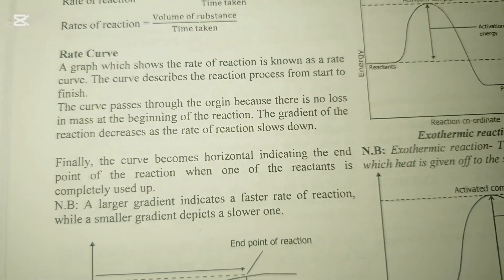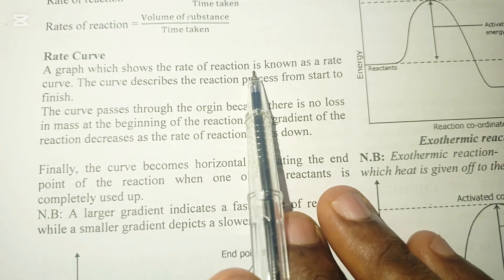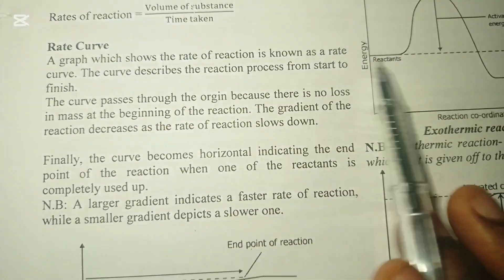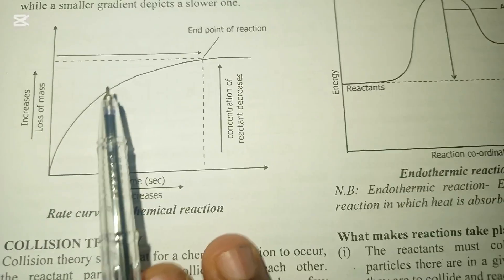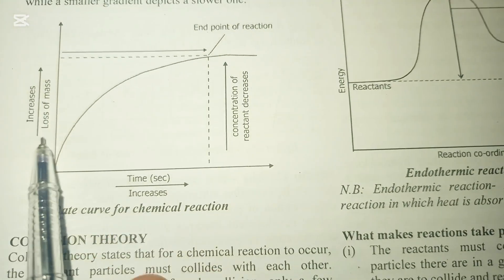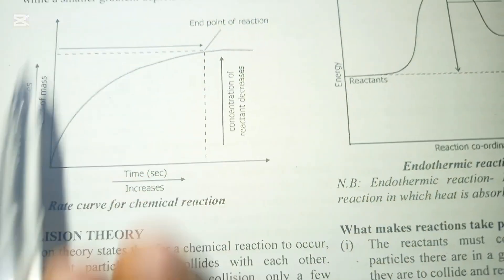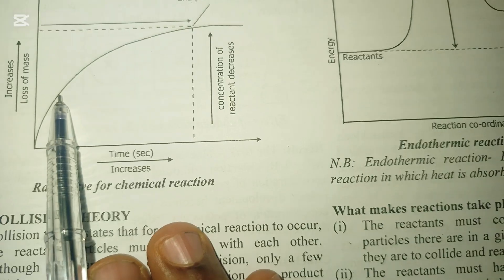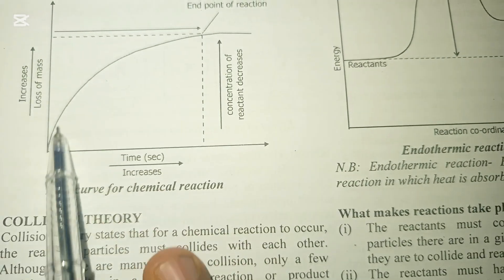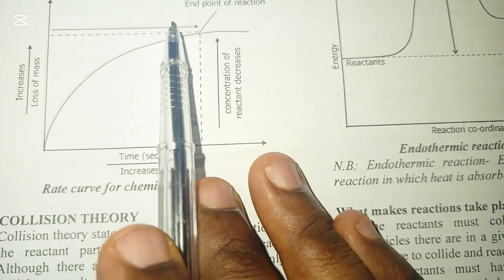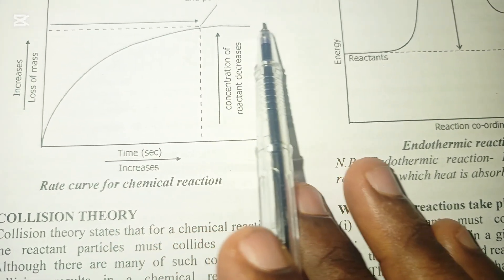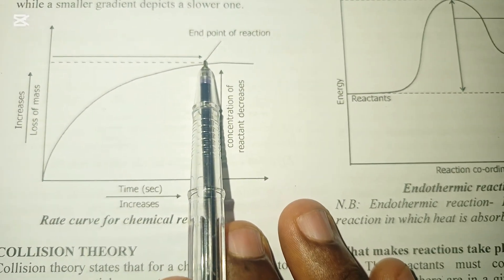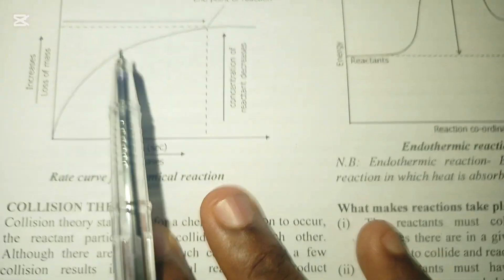The next thing is the rate curve — a graph which shows the rate of reaction. The curve describes the reaction process from start to finish. On the graph, loss of mass increases as time increases; the reactant loses mass as it reacts. At a certain time, it stops losing mass and goes straight — that is the endpoint of the reaction, meaning all mass has been lost and the reaction is complete.